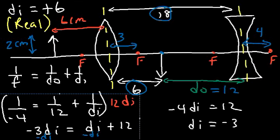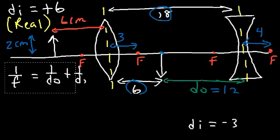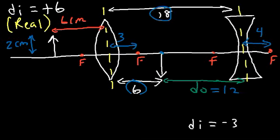Since di is negative, the second image is virtual. Because it's negative, it's going to form on the left side of the divergent lens, somewhere at this point. Keep in mind the focal length is 4, so since di is 3, the image is located between the focal point and the lens.